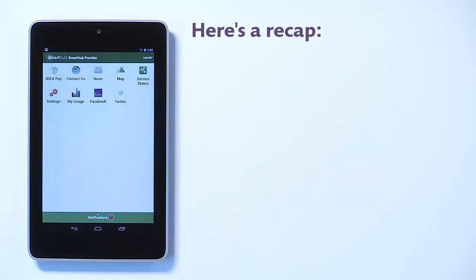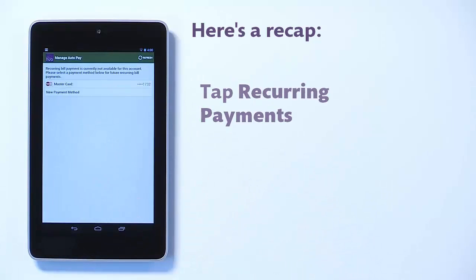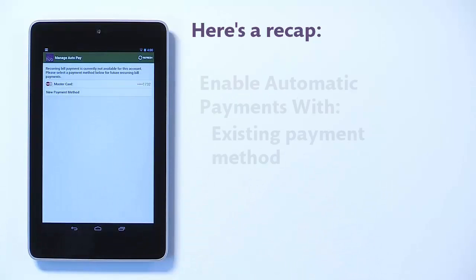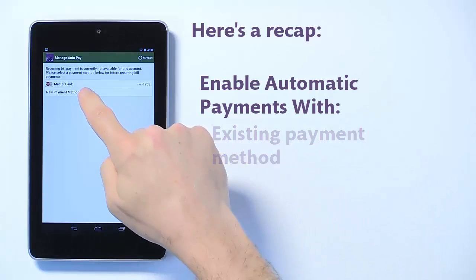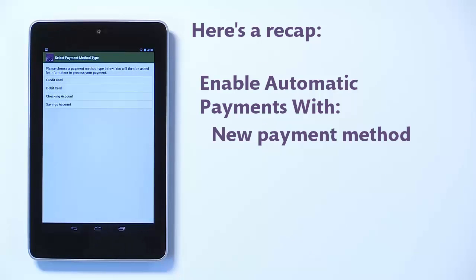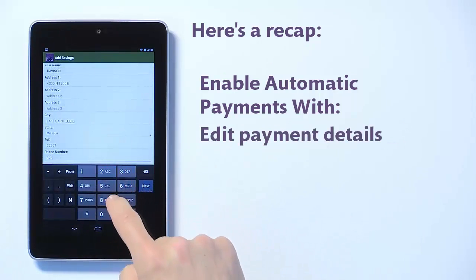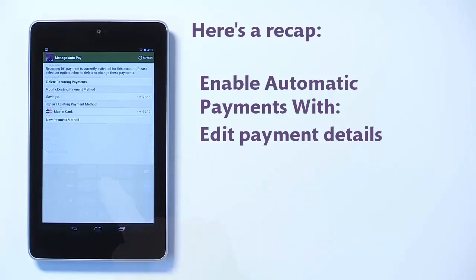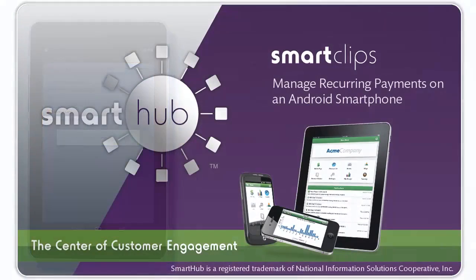Here's a recap. To manage your recurring payments, access the Bill & Pay screen and tap Recurring Payments. Here, you can enable your account to be paid automatically by an existing payment method, add a new payment method, edit certain details for the existing payment method if there is one, or stop recurring payments for this account.